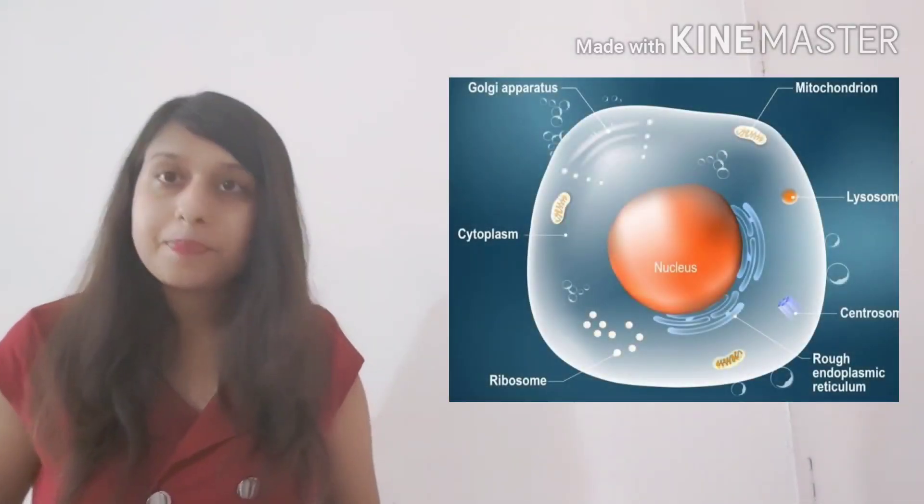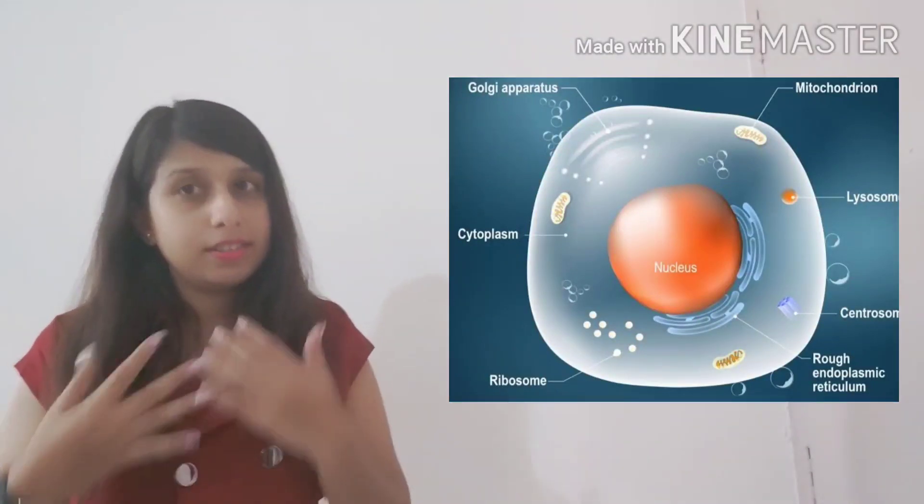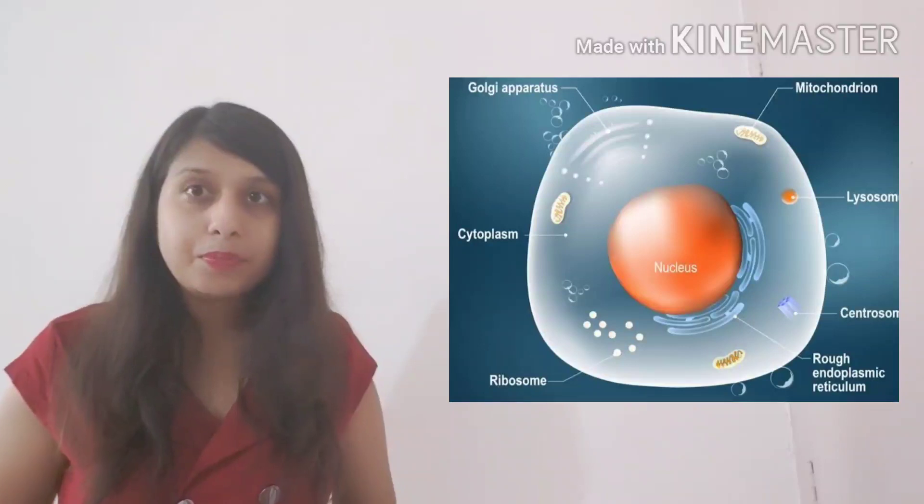So we have studied almost all the organelles which are there in your syllabus in this chapter. Now I hope that you understood all of it. What is a cell and the different parts of the cell. We also studied some organelles which are included only in plant cell. So I hope you understand the difference between the plant cell and animal cell. Now let us discuss that.